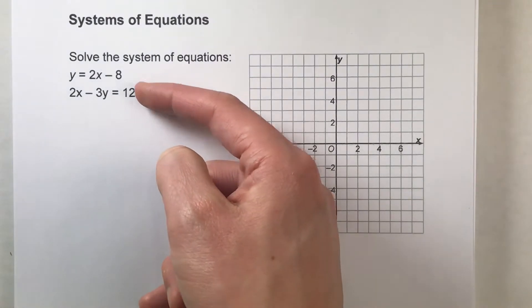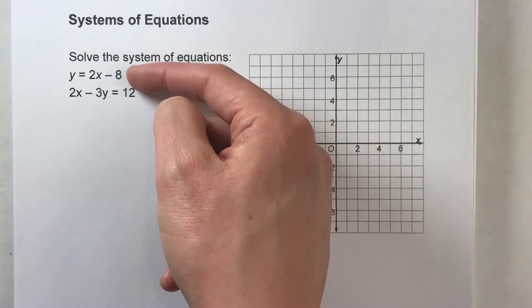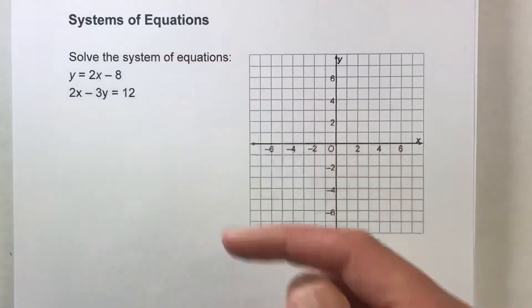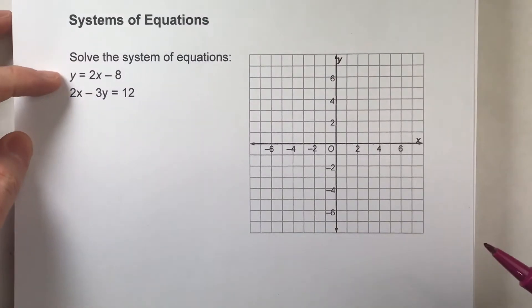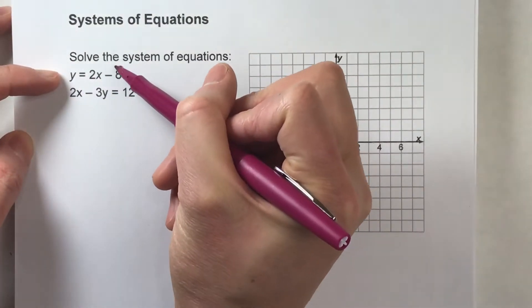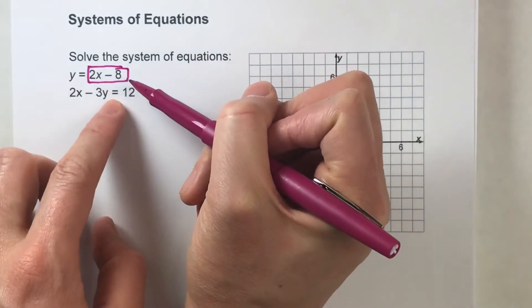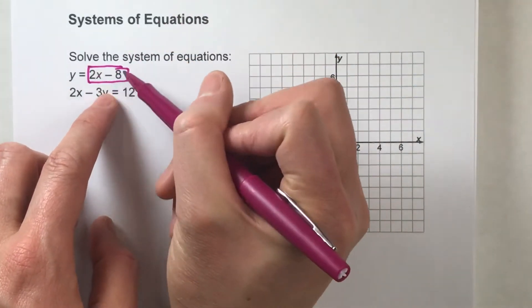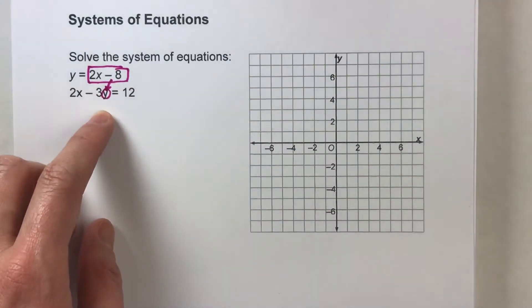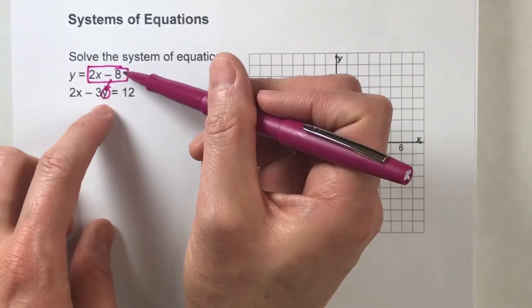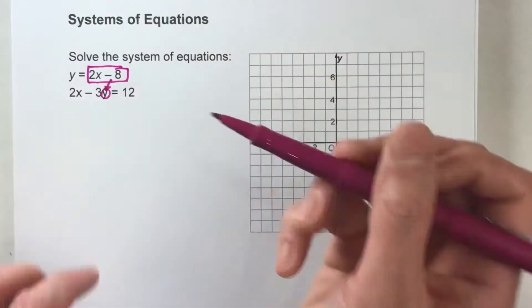The way we solve this using algebra isn't that much different than if they were both in slope-intercept form. We're going to use substitution, and here's why: because our first equation has y equals all this stuff, so we know y is equal to all of this. What we can do is substitute all this stuff in for y in the second equation. Since we know y equals 2x minus 8, we're going to replace y in the second equation with 2x minus 8.